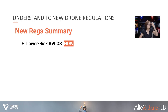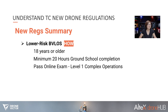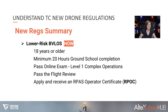Now let's talk about how to conduct the BVLOS operations. From the operator perspective, the operator needs to be at least 18 years or older, needs to complete a minimum 20 hours of ground school, pass the online Level 1 complex operations written exam, and pass the flight review. They also need to apply and receive an RPOC operator certificate.